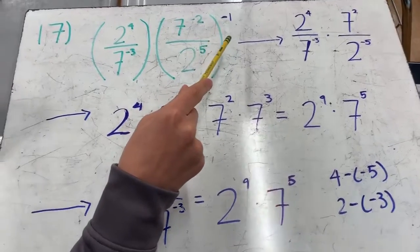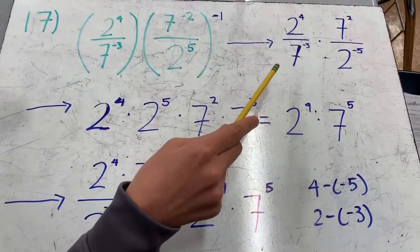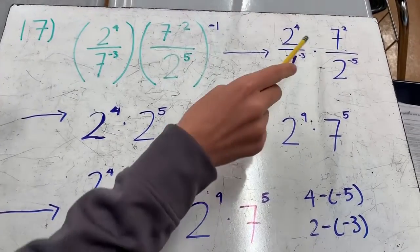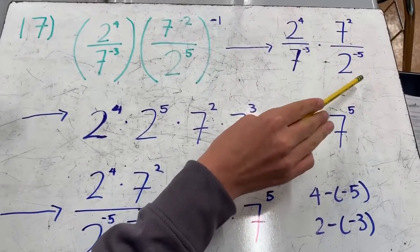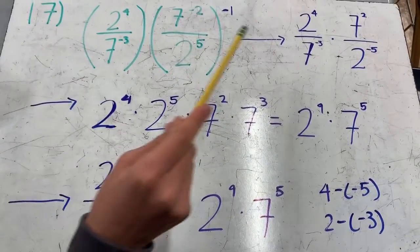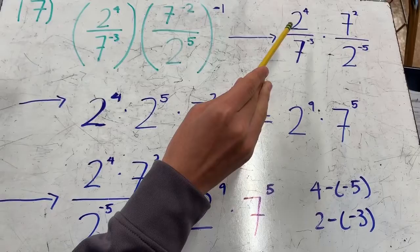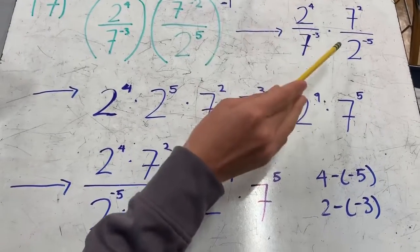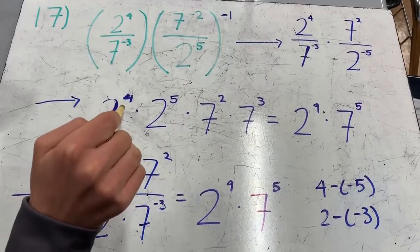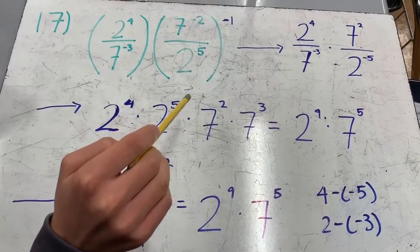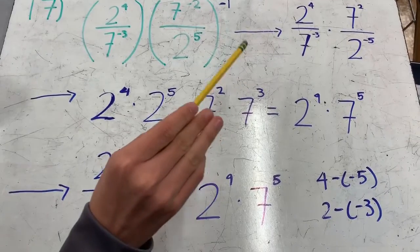You would distribute the negative 1st power, and you would get 2 to the 4th power over 7 to the negative 3rd power times 7 to the 2nd power over 2 to the negative 5th power. The law of exponents states that if you have a negative exponent in the denominator, you can bring it up to the numerator, and you would get 2 to the 4th power times 2 to the 5th power, multiplied by 7 to the 2nd power times 7 to the 3rd power.